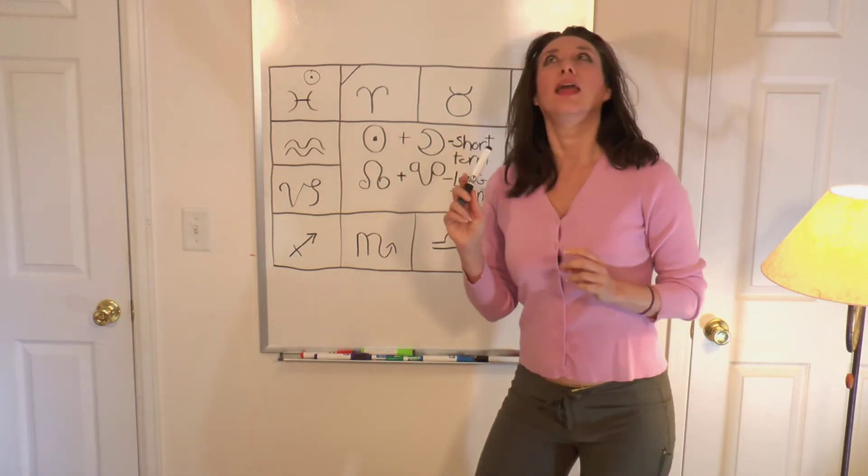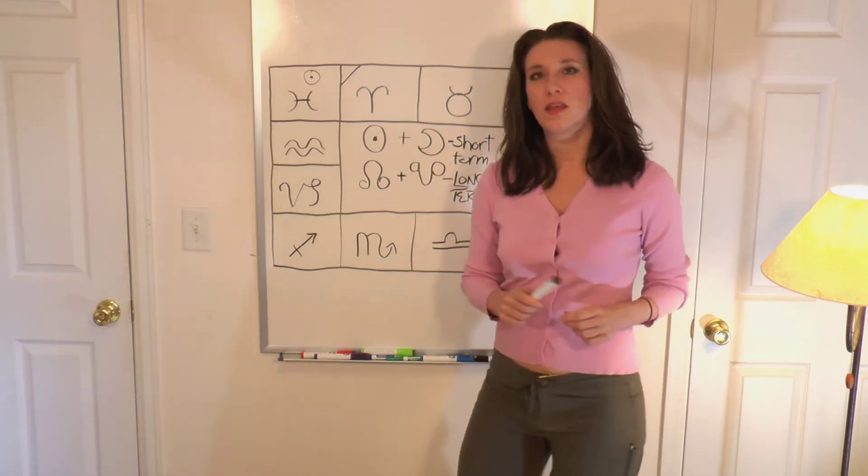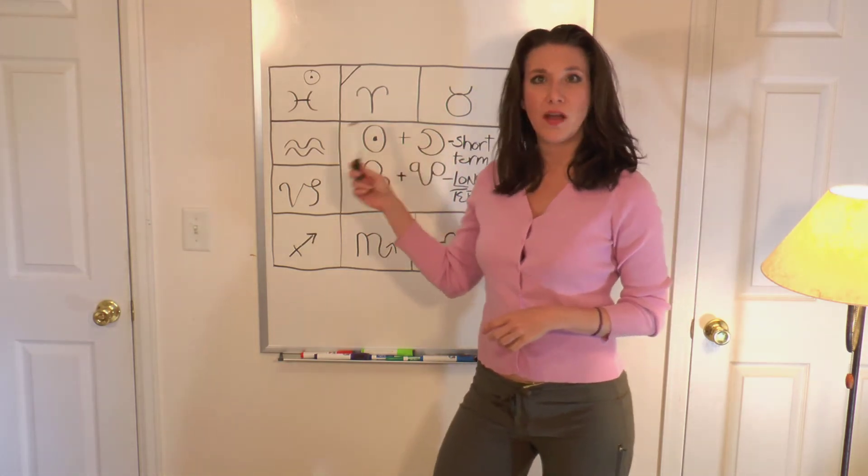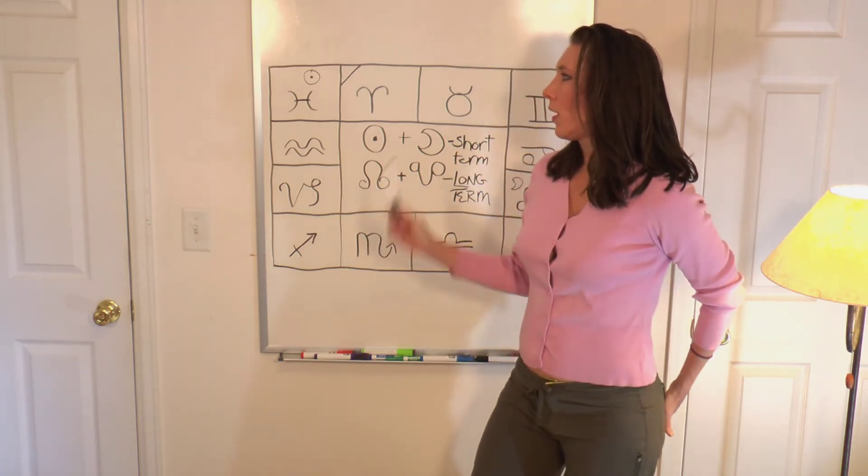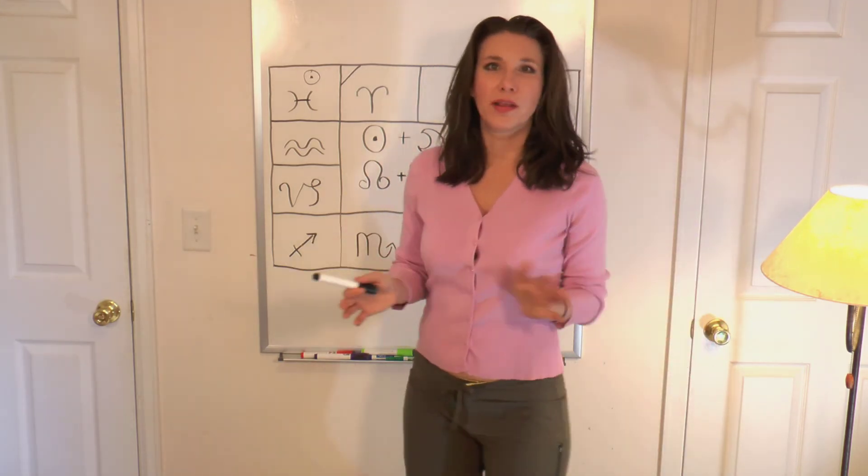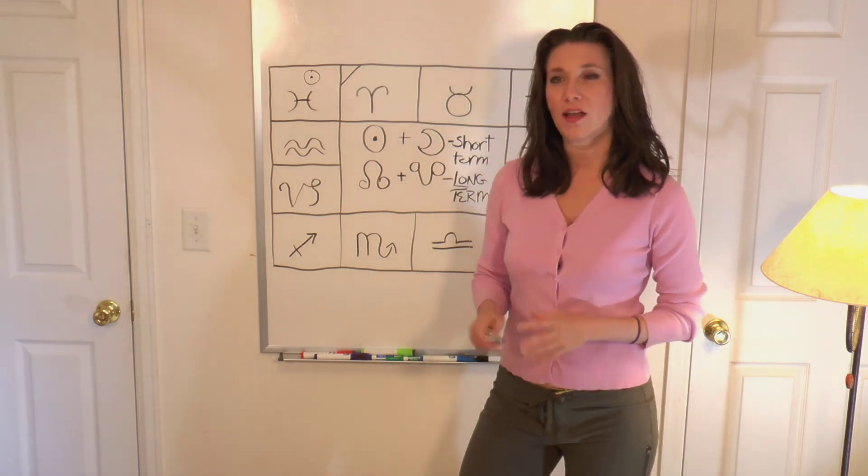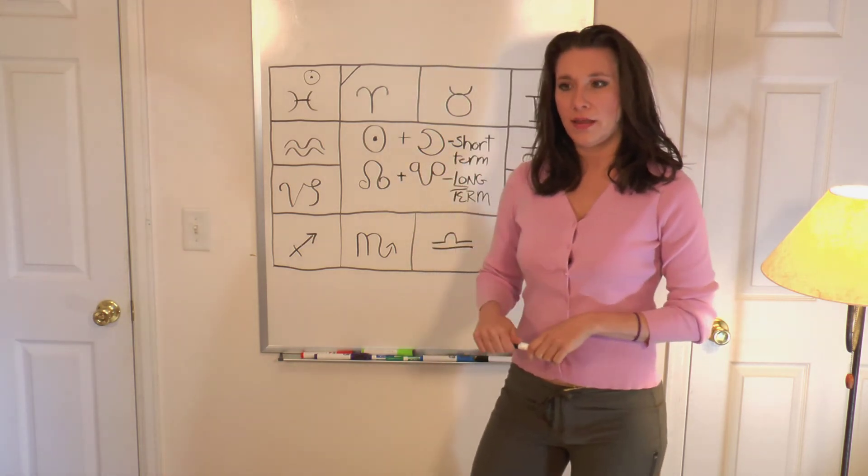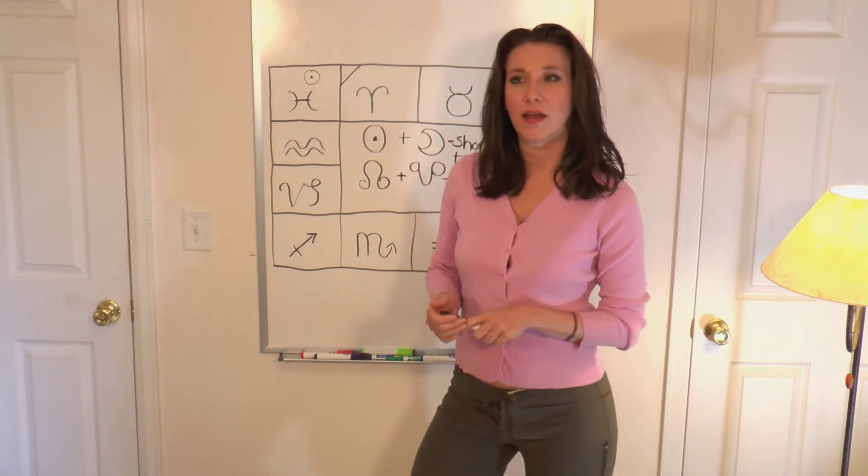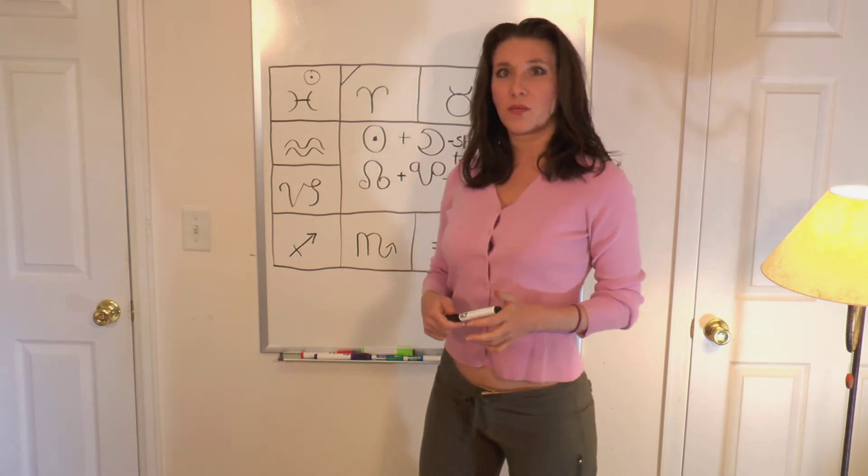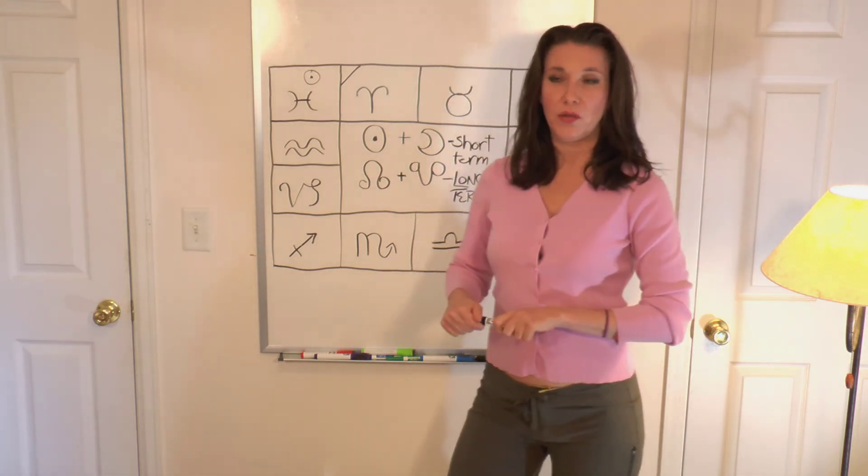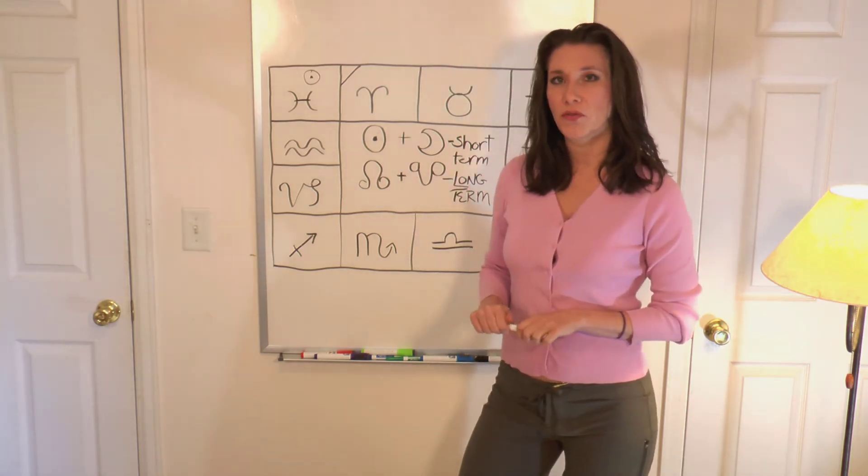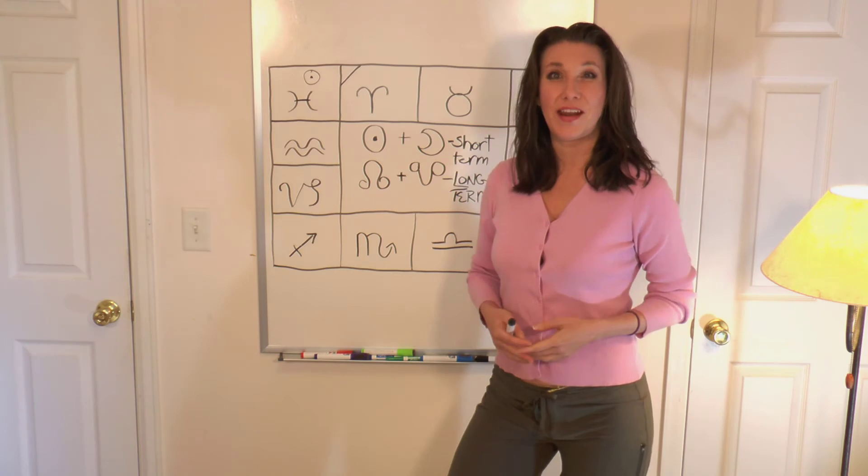Now, it takes a year and a half for the nodes to move through a sign. They're always opposite each other, as you know. So right now, I want to just interject here. I always use the tropical zodiac. I do not use sidereal zodiac. So in case you're a Vedic astrologer and you're wondering, I use the tropical zodiac and I've used both and that's what I prefer. That's what I use. Some other astrologers that I've learned from also do the same thing.